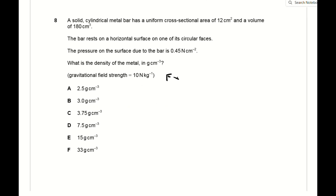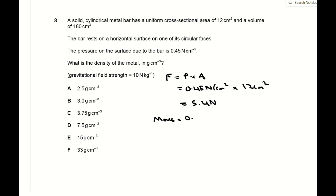For question 8, use the pressure and cross-sectional area values to find the force due to the weight of the bar, which comes out to 5.4 N. With g = 10 N/kg, the mass of the bar is 0.54 kg. Using this mass and a volume of 180 cm³, the density of the metal is 540/180 = 3 g/cm³.